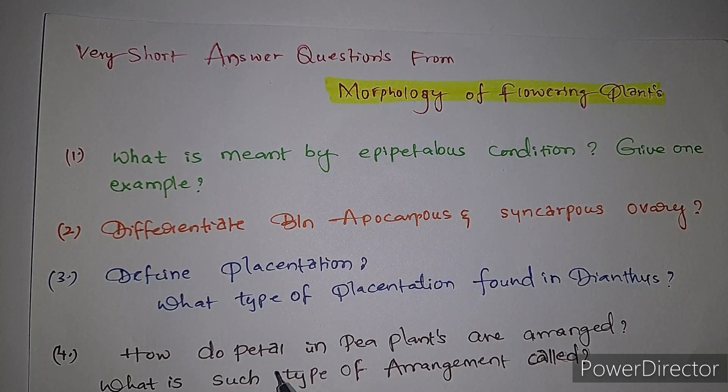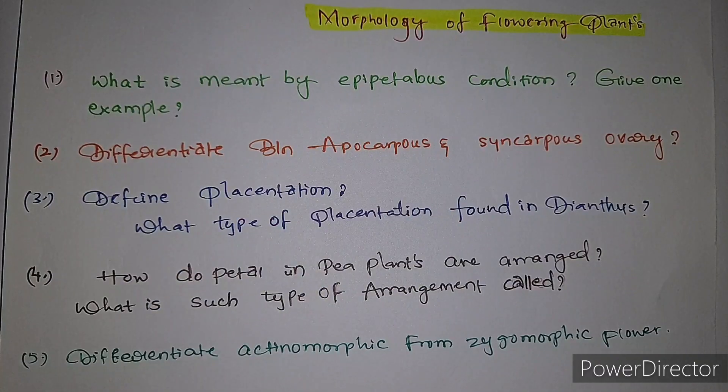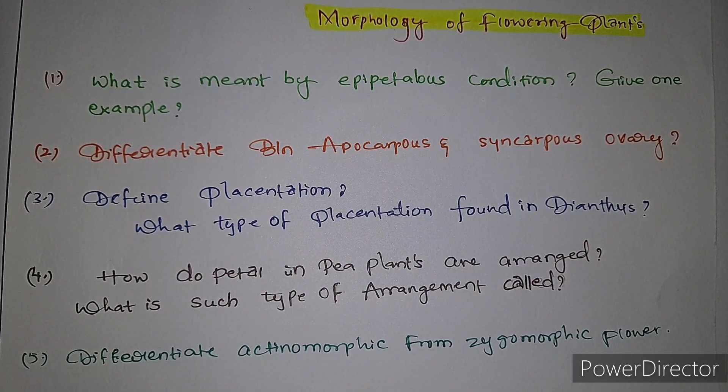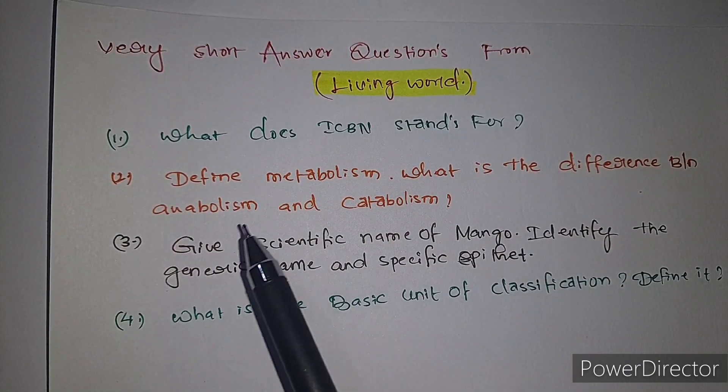Second question: differentiate between apocarpous and syncarpous ovary. Third question: define placentation. What type of placentation is found in Dianthus? Fourth question: how are petals in pea plants arranged? What is such type of arrangement called? Fifth question: differentiate actinomorphic from zygomorphic flower.